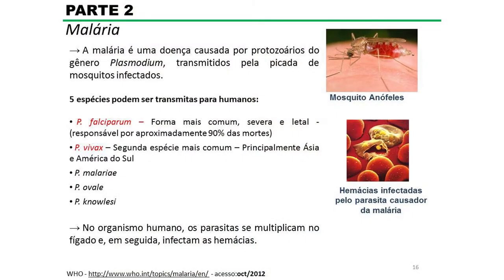Já dando início à segunda parte da minha tese, o foco era a malária. A malária é uma doença causada por protozoários do gênero Plasmodium. Atualmente são conhecidas cinco espécies que podem infectar o organismo humano: o Plasmodium falciparum, que é a forma mais comum, severa e letal, responsável por mais de 90% das mortes, encontrado principalmente na África; o Plasmodium vivax, a segunda espécie mais comum, encontrado principalmente na Ásia e na América do Sul; e ainda o Plasmodium malariae, o Plasmodium ovale e o Plasmodium knowlesi. O Plasmodium é transmitido pela picada da fêmea do mosquito Anopheles.